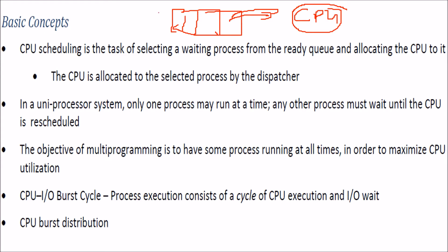The CPU is allocated to a process by the short-term scheduler first. Once the short-term scheduler selects a process, the dispatcher takes control and moves that process to the CPU. In a uniprocessor system there is no problem, but with multi-programming — running multiple processes — we want to determine the order that maximizes CPU utilization.